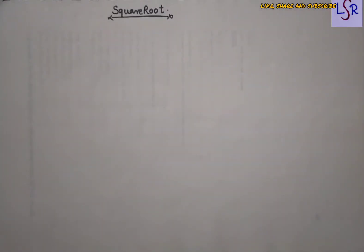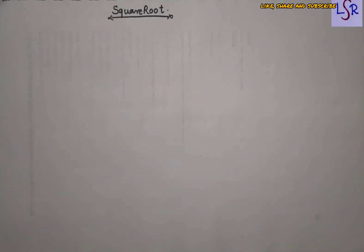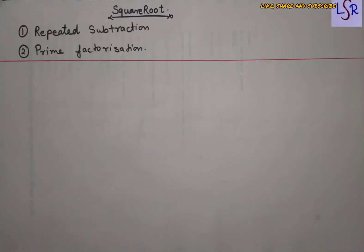Hello everyone, here we are going to start with the chapter on square roots and we will learn different methods by which we find the square root of a given number. The two methods we are going to discuss in this video are repeated subtraction and prime factorization. Let's start with exercise 3.3 — in question number one we have to check whether a number is a perfect square or not using the repeated subtraction method.